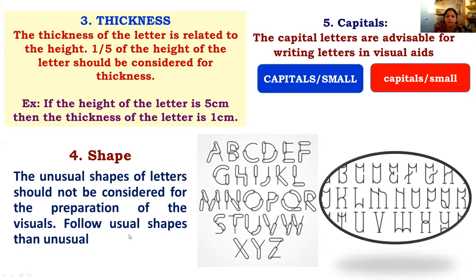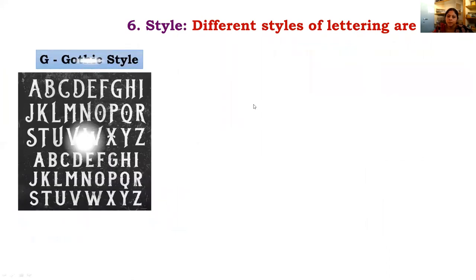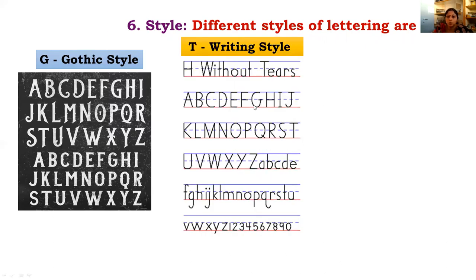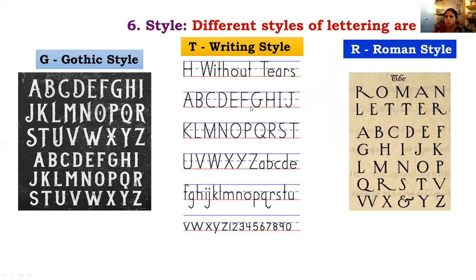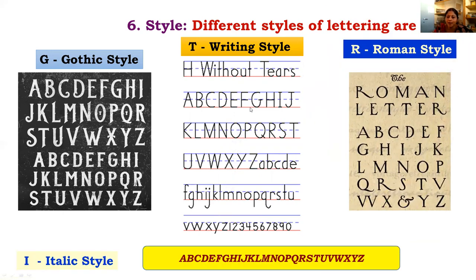There are different styles of lettering, but the four most important styles accepted in preparation of visual aids are: Gothic style (easy to understand), Writing style (easy to observe and accept), Roman style, and Italic style. These are the four major accepted lettering styles when preparing visual aids.